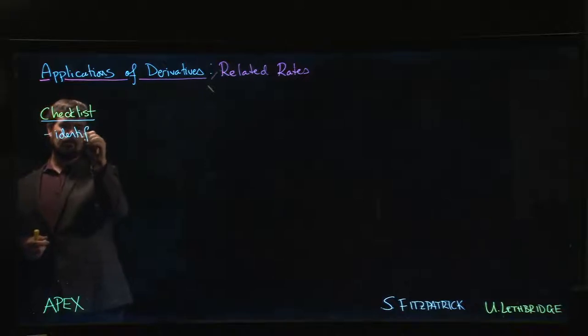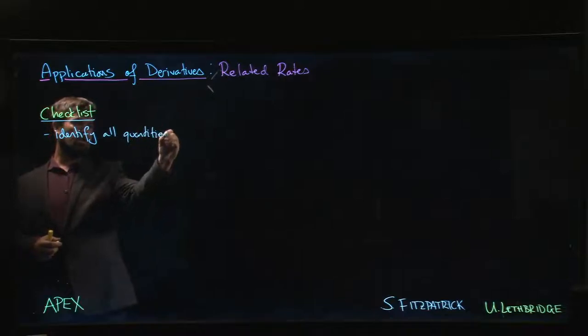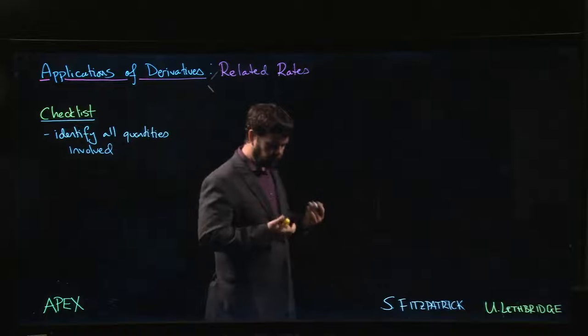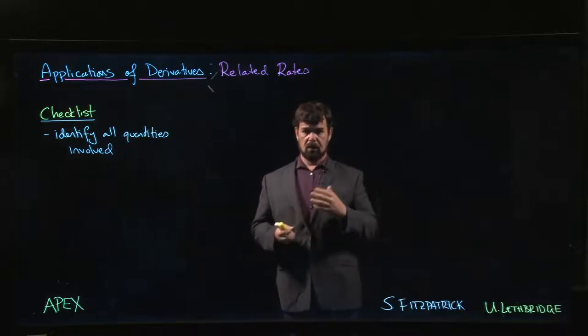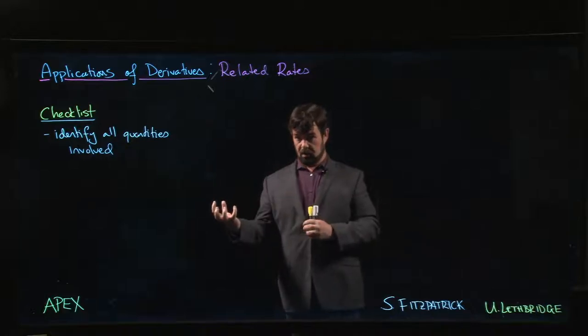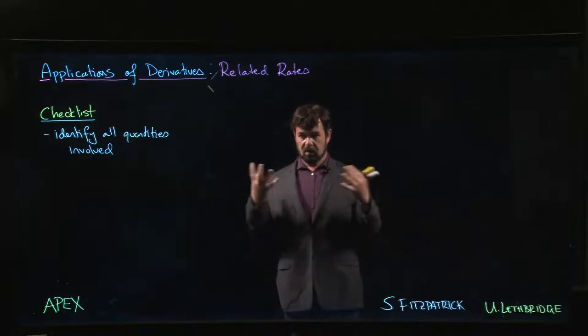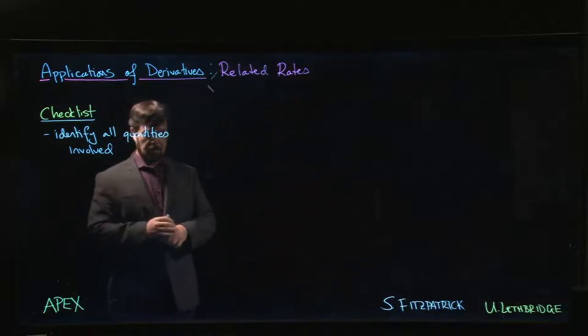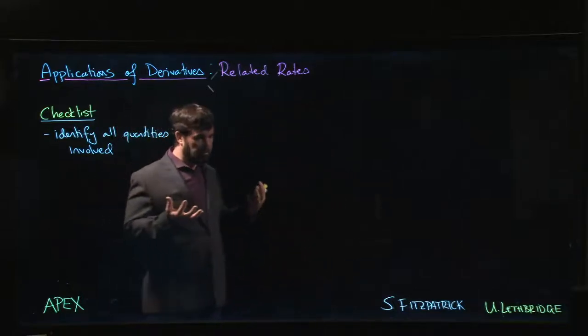The first thing that we need to do is identify all quantities that are involved. These related rates problems have to do with how the rate at which one quantity is changing affects the rate at which another quantity is changing. We know that derivatives give us information about rates of change.